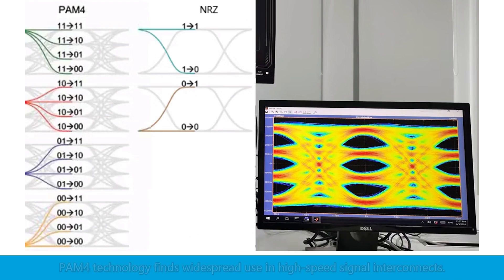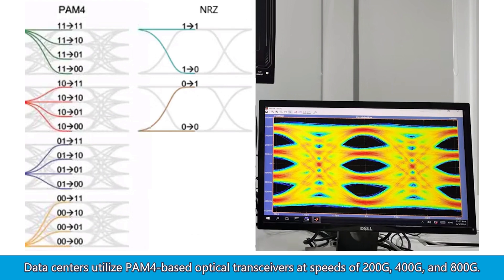In terms of applications, PAM-4 technology finds widespread use in high-speed signal interconnects. For example, data centers utilize PAM-4-based optical transceivers at speeds of 200G, 400G, and 800G.